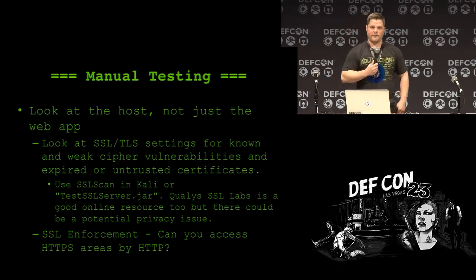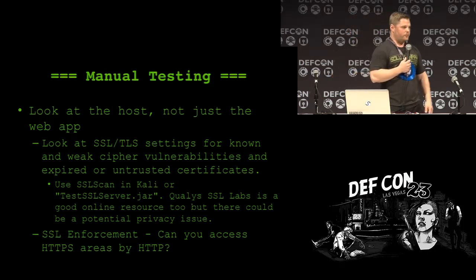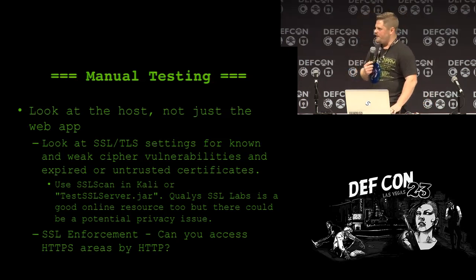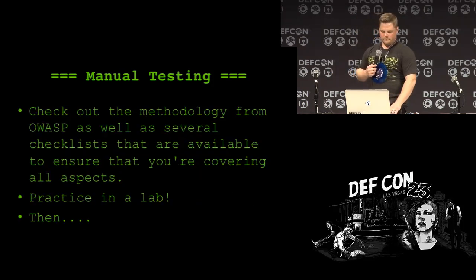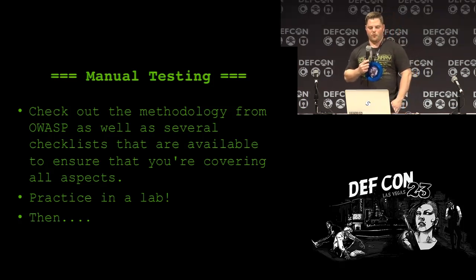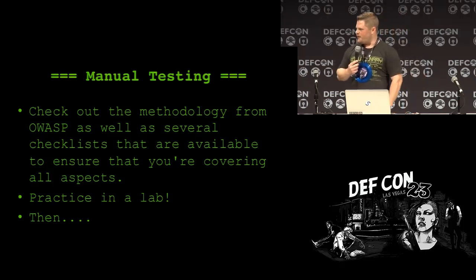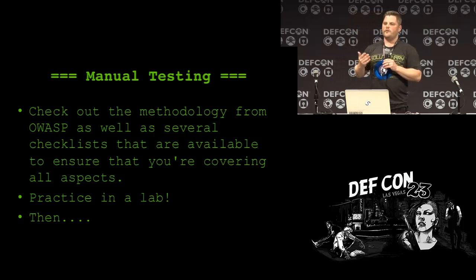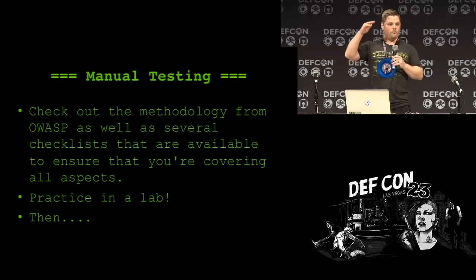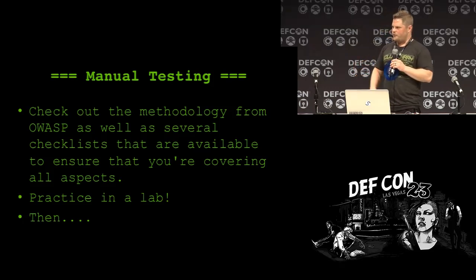Look at SSL/TLS settings — are they using weak ciphers with known vulnerabilities? If so, document that and let them know. There are methodologies from OWASP as well as several other checklists to help you stay on track. If you're new to assessing or hacking web apps, go to the OWASP site, look at their methodology, and it will walk you through exactly what to look at, what things to look for, and how to assess them.